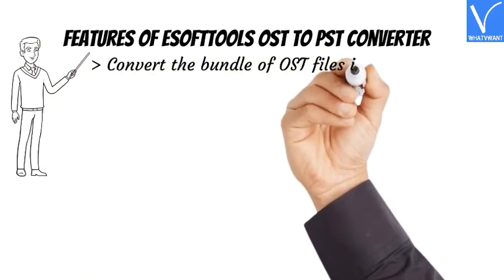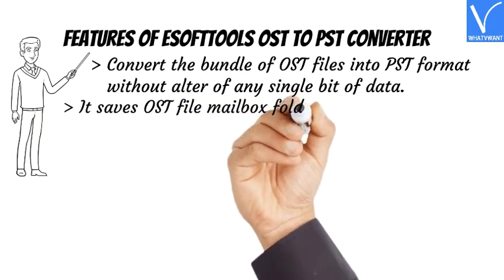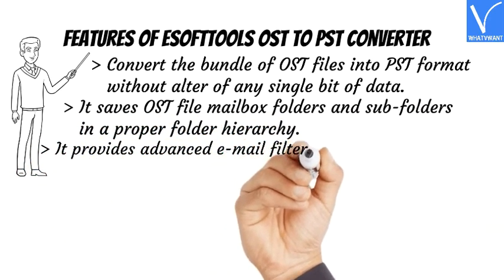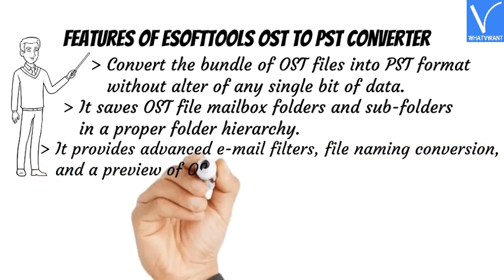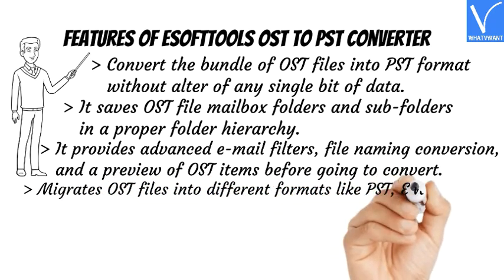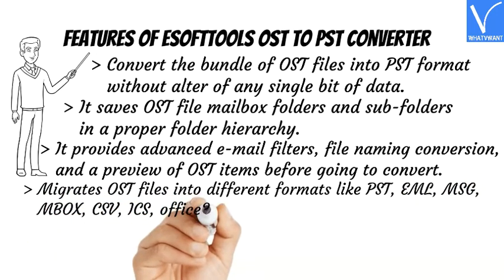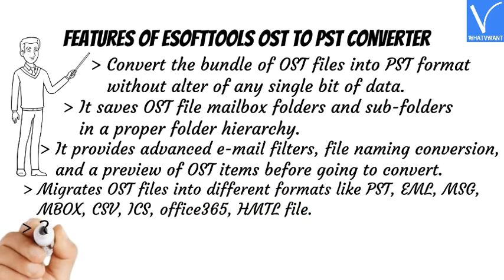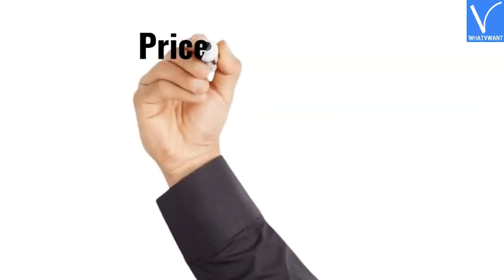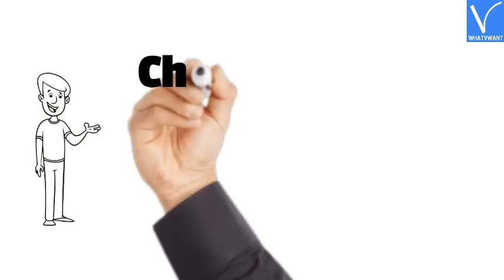Features of E-Soft Tools OST to PST Converter: Convert a bundle of OST files into PST format without altering any single bit of data. Saves OST file mailbox folders and subfolders in a proper folder hierarchy. Provides advanced email filters, file naming conversion, and a preview of OST items before conversion. Migrates OST files into different formats like PST, EML, MSG, MBOX, CSV, ICS, Office 365, and HTML files. Recover selective OST mailbox folders and corrupted OST files. The price and plans are exhibiting on the screen. The product link is provided in the description.